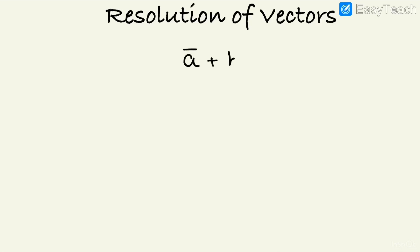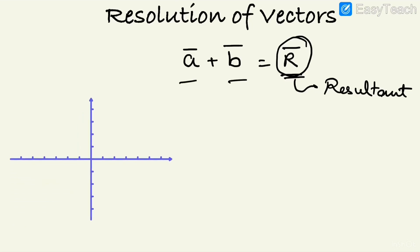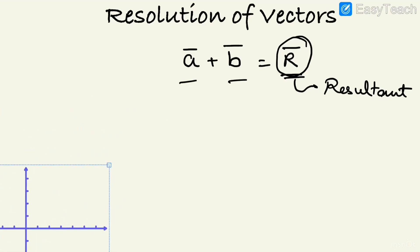A vector plus B vector equals the resultant R vector — the resultant of A vector and B vector. Now suppose R is given in a coordinate system, and you are told to find out two vectors which on adding will give R vector. This method is called resolution of vectors — finding out any two vectors which will result in that R vector.